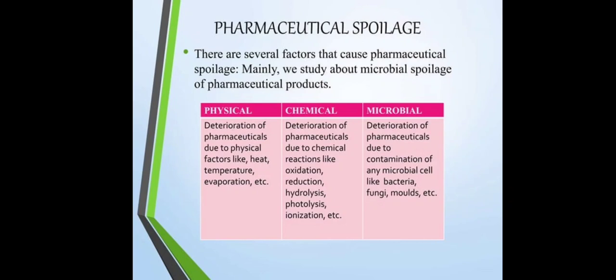There are several factors that cause pharmaceutical spoilage. We mainly study microbial spoilage of pharmaceutical products, as well as physical and chemical factors. Deterioration due to physical factors includes heat, temperature, evaporation, etc. Deterioration due to chemical reactions includes oxidation, reduction, hydrolysis, photolysis, ionization, etc. Third is microbial: deterioration due to contamination by microbial cells like bacteria, fungi, and molds, etc.